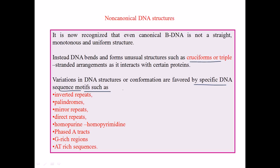There are four types of repeat sequences found in DNA: inverted repeats, palindromic repeats, mirror repeats, and direct repeats. These repeat sequences play a very important role in making structures like quadruplex DNA and triplex DNA. We can also find continuous stretches of homo-purine or homo-pyrimidine residues — poly-A, poly-T — as well as G-rich and AT-rich sequences, all of which have different structural consequences.